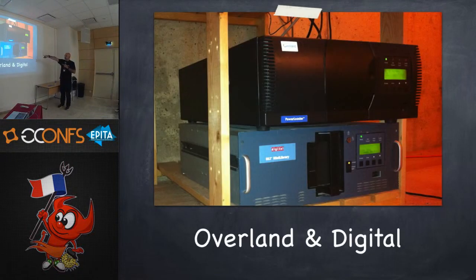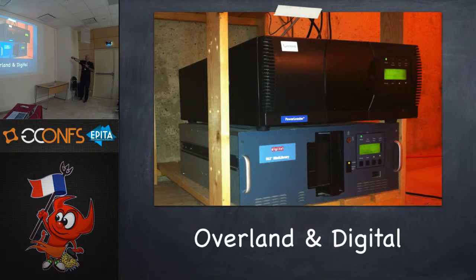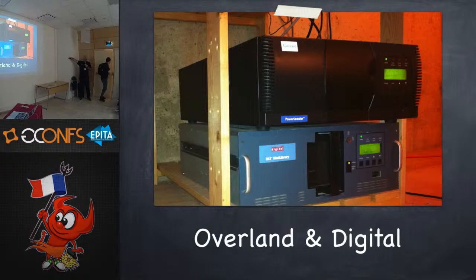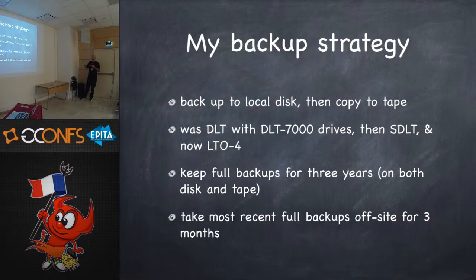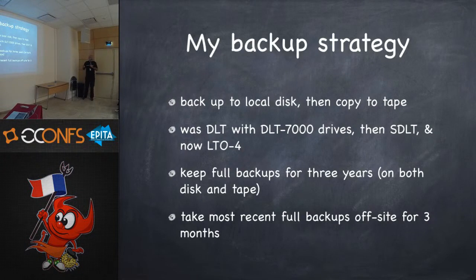This is an old DEC DLT 7000 tape drive that I use. That machine died shortly thereafter — it's actually a DLT 8000. I found the 7000s more reliable than the 8000s. This store is about 80 gig compressed. I back up to local disk; everything streams down to the local ZFS server, then gets copied to tape afterwards. I used to copy to tape every day, but now I only copy to tape once a month.